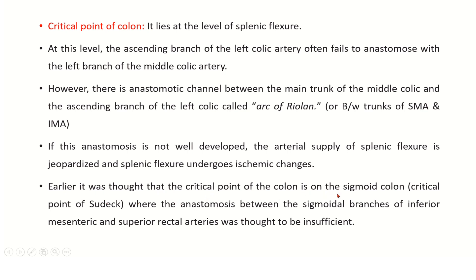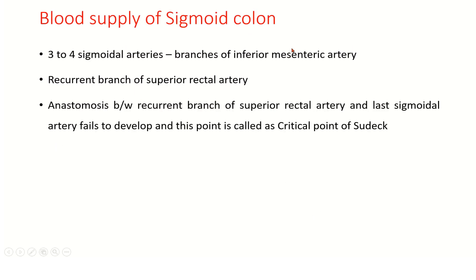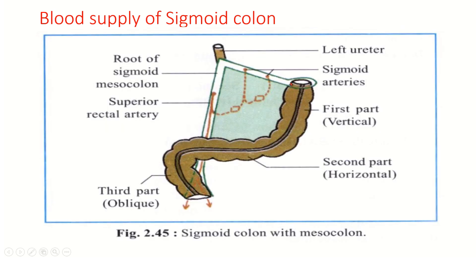The critical point of the colon lies at the level of the splenic flexure, where the ascending branch of the left colic artery often fails to anastomose with the left branch of the middle colic artery. It was earlier thought that the critical point of the colon was on the sigmoid colon, called the critical point of Sudeck, where the anastomosis between the last sigmoidal artery and the recurrent branch of the superior rectal artery is absent. If this anastomosis is absent, that area is called the critical point of Sudeck.